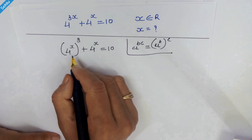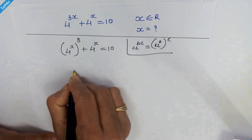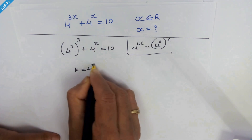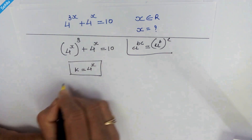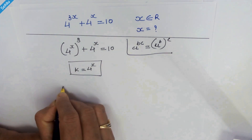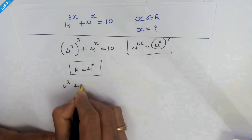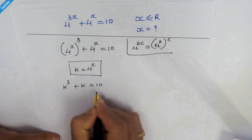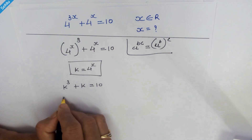We will take k in place of 4 raised to x. So let k equal 4 raised to x. Then we have k cubed plus k is equal to 10.